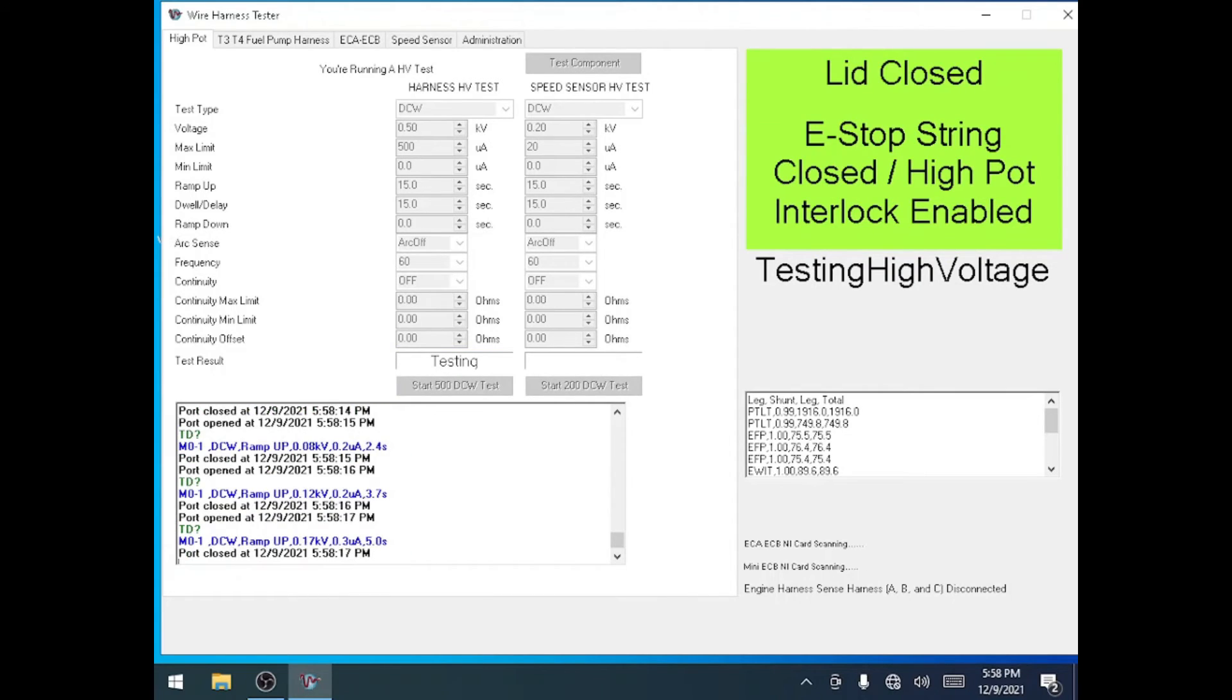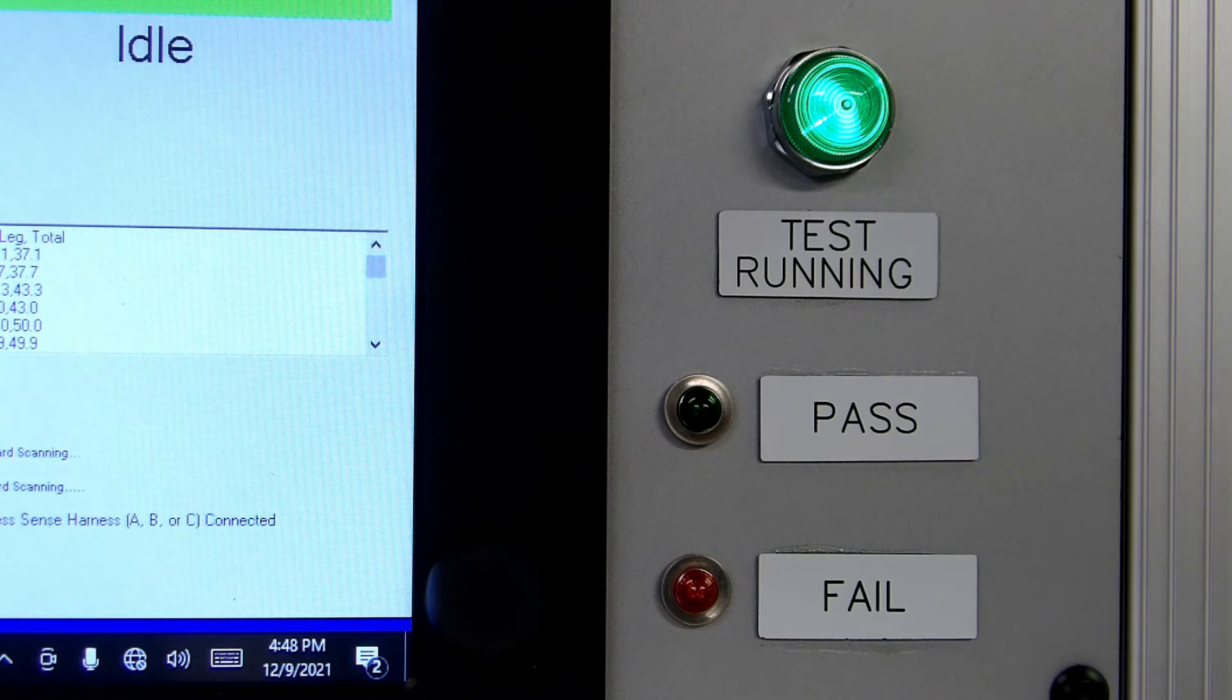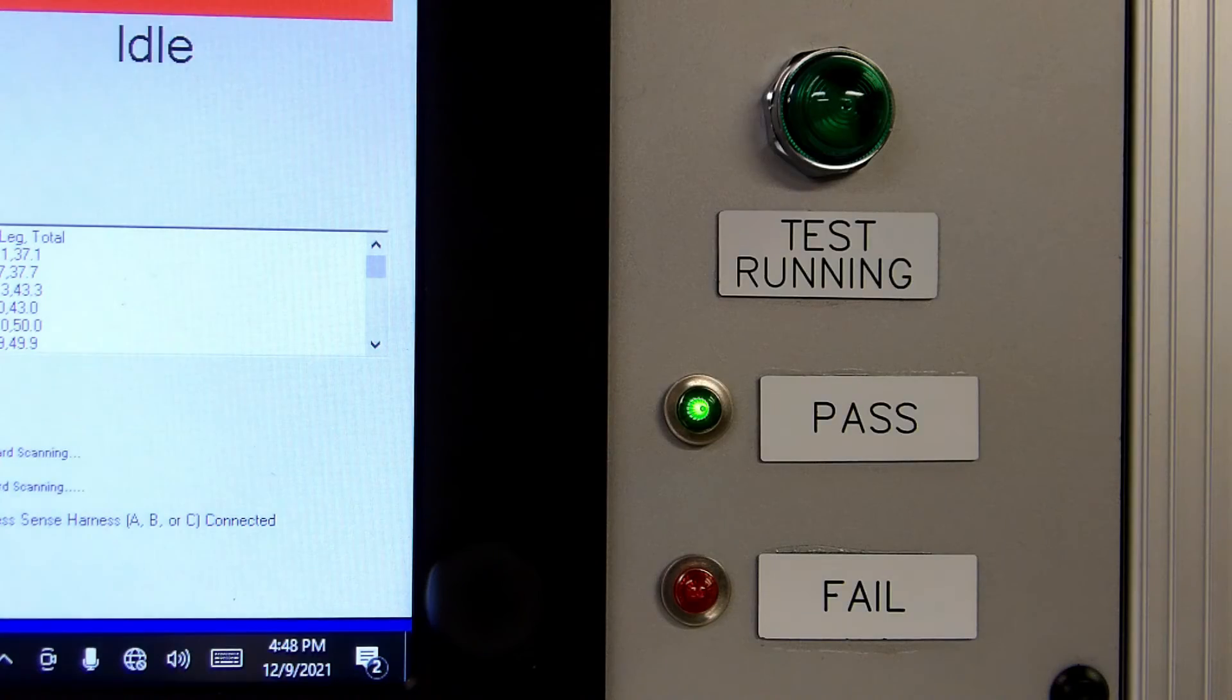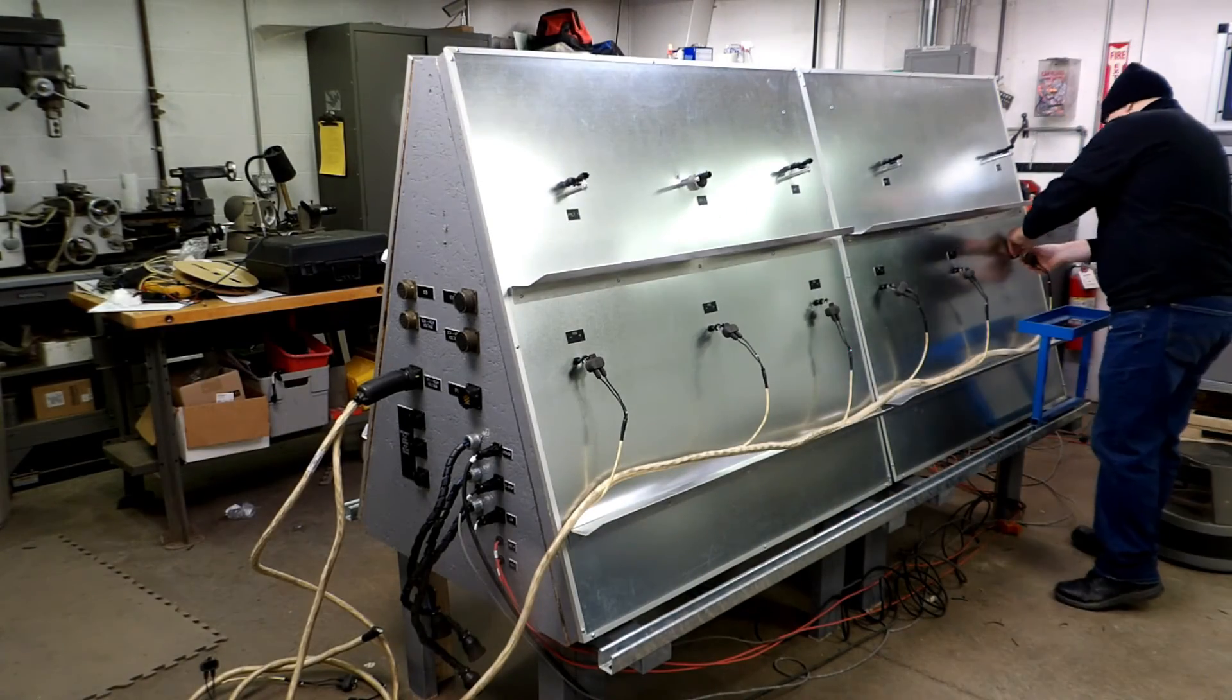The high voltage indicator light will flash on the front of the operator console while the test is running. Once the test is complete, the high voltage flasher will go out and the pass fail indicator will light. The EFI harness test is now complete. Disconnect the harness from the easel.